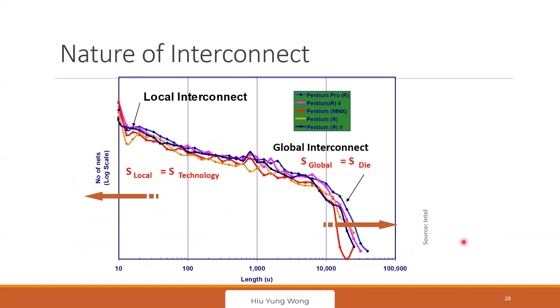Looking at a CPU chip, most nets are very short, but a few nets can be really long — around 10 millimeters. These are typically the power distribution lines and clock lines, which are most impacted by parasitic resistance. Even as we scale to shorter technology nodes, even shorter wires have some impact. In the scaling process, we scale dimensions using a scaling parameter S from node to node.